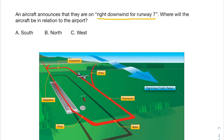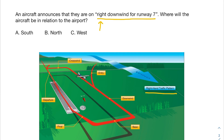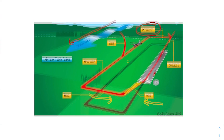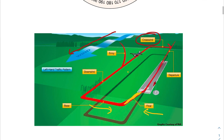That 'right' is associated with the right hand traffic pattern, which means the pilot is going to be turning right at every opportunity. Off the downwind, we're turning right to enter the base leg, then turning right again to enter the final leg. That's what right means — as opposed to the left hand traffic pattern, where off the downwind you turn left to get to the base, and then left again to get into the final leg.